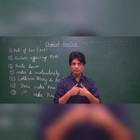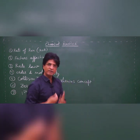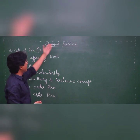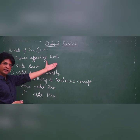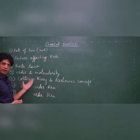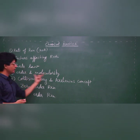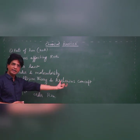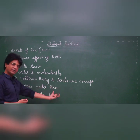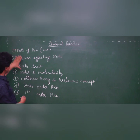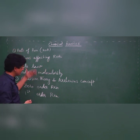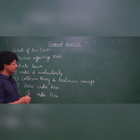How we will proceed? For convenience, we have divided chemical kinetics into seven subtopics: rate of reaction, factors affecting rate of reaction, rate law, order and molecularity, collision theory and Arrhenius concept, zero order reaction and first order reaction. We will try to complete at least three to four subtopics today and the rest we will do in the coming lectures.